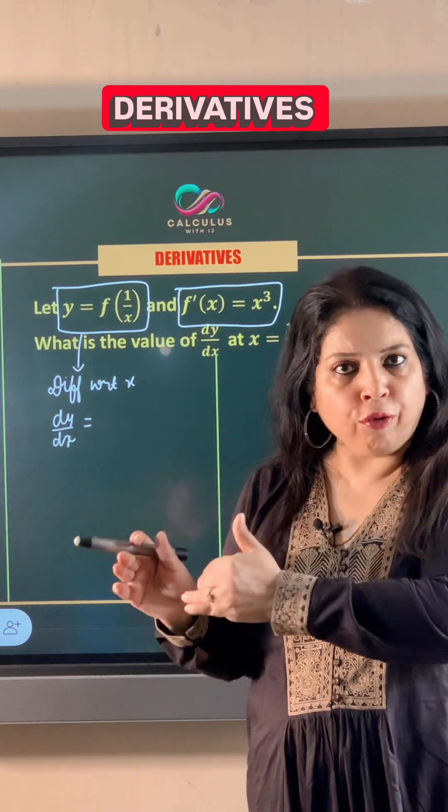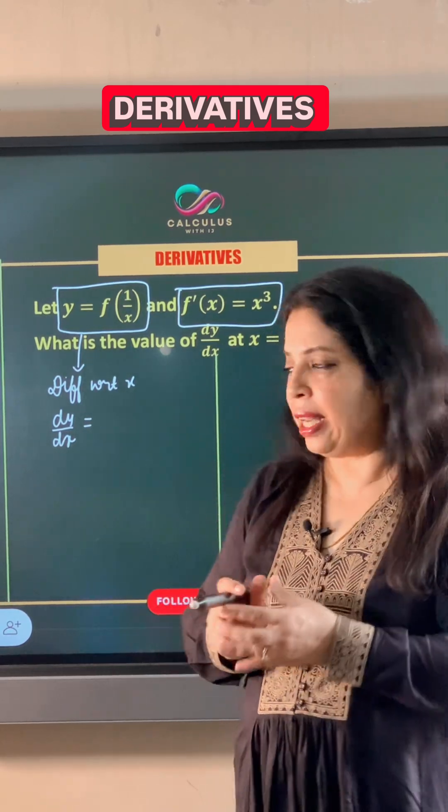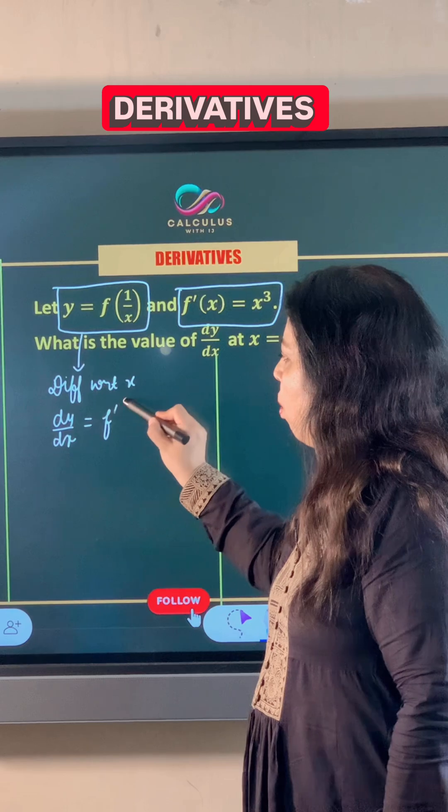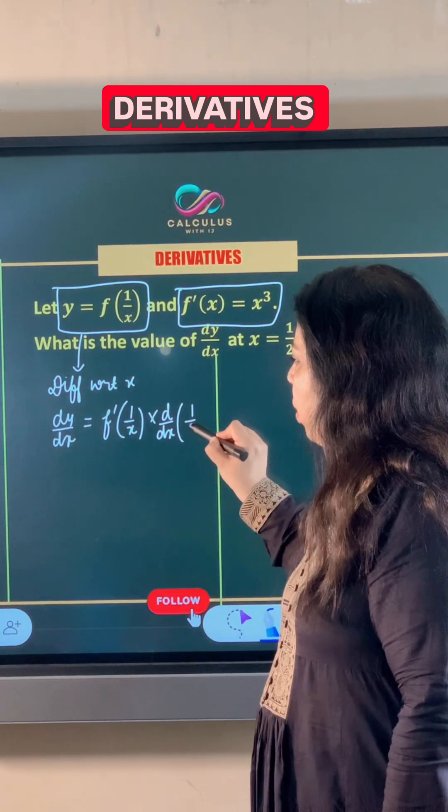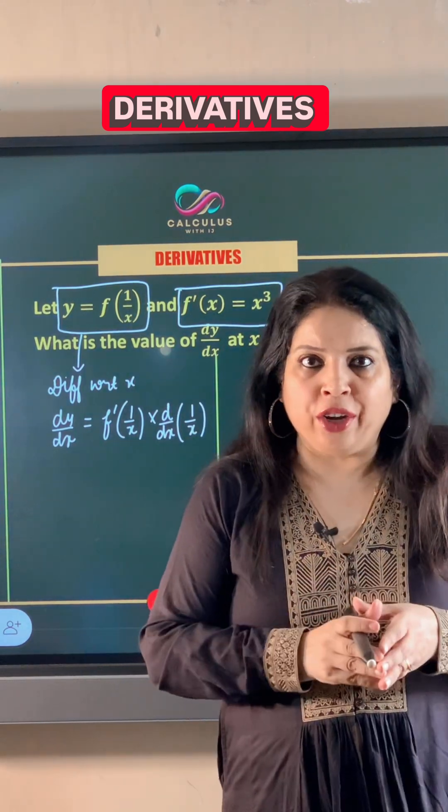But we have f of 1/x. So its derivative will be f dash of 1/x, and along with this we will also take the derivative of 1 upon x according to the chain rule.